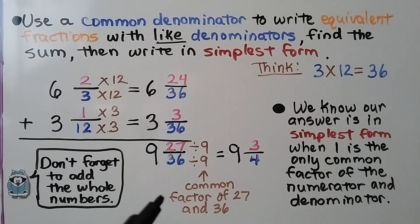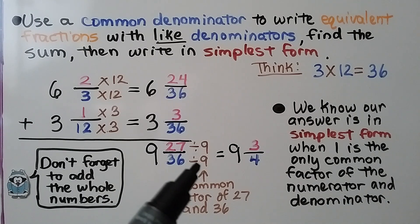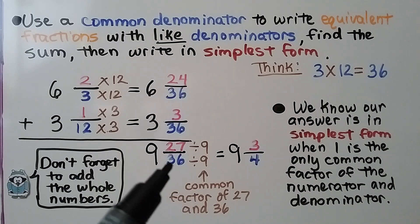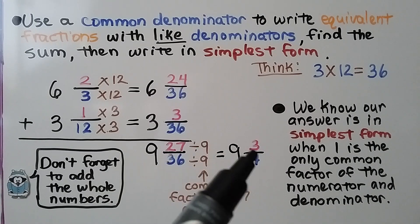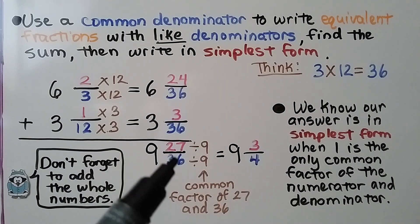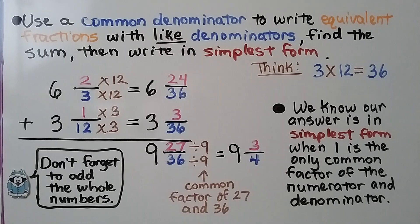A common factor of 27 and 36 is 9. So we write it in simplest form: 27 divided by 9 is 3, and 36 divided by 9 is 4. We have 9 and 3 fourths. We know our answer is in simplest form when 1 is the only common factor of the numerator and denominator.